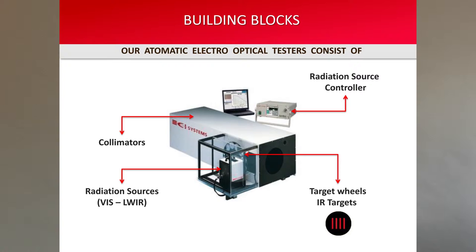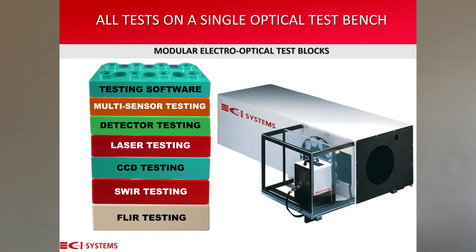CA has gained experience in designing and manufacturing automated electro-optical testers. Our testers consist of radiation sources from the visible to the long-wave infrared, collimators, target wheels, targets, and other equipment for performing thermal camera testing or FLIR testing, SWIR camera testing, CCD — sometimes also referred to as visible testing or day TV testing — detector testing of all kinds, and multi-sensor or channel testing.